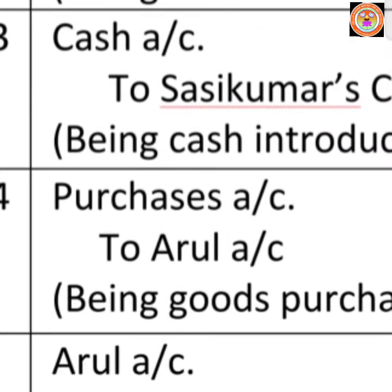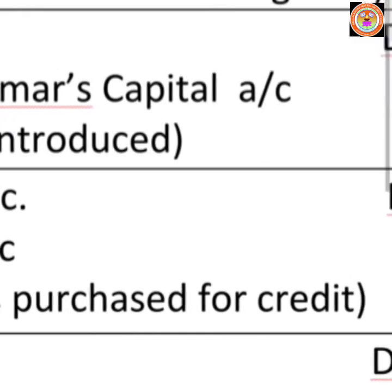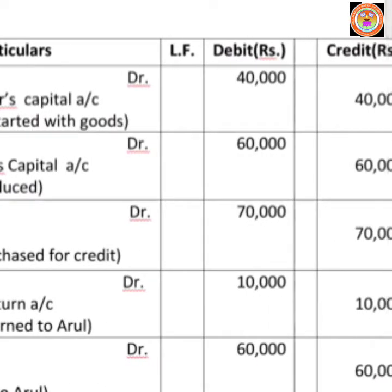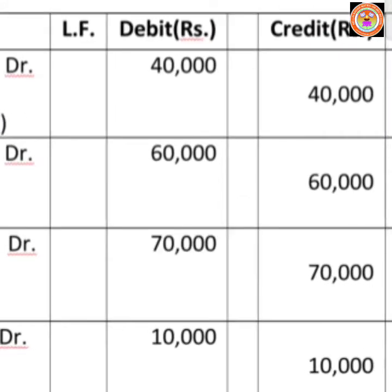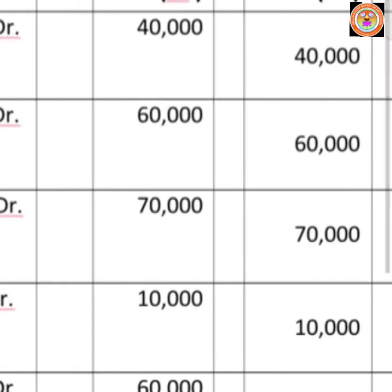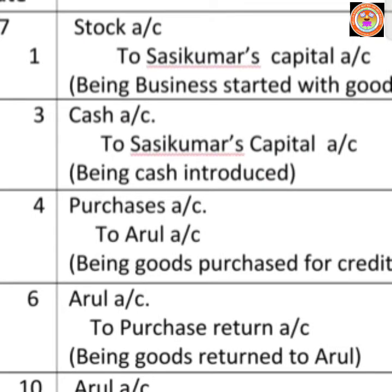Start the word 'To' after leaving some space from the line. Then write the amount: Rs.60,000. Rs.60,000 must be written in both amount columns — 60,000 in the debit amount column and 60,000 on the Sassi Kumar Capital Account line. Then write the narration: 'Being cash introduced.' All journal entries must be followed with narration — don't forget to write the narration.